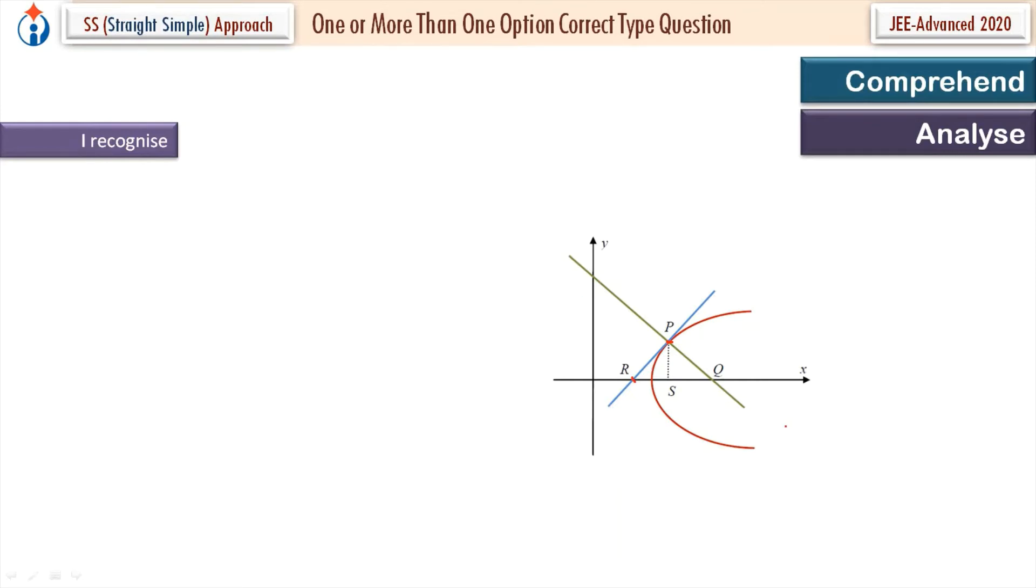Normal cuts off equal intercept. Now if normal cuts the equal intercept on the x-axis, y-axis, means the slope of this line will be minus 1. So I recognize this. The slope of tangent will be plus 1. And when m₂ is equal to minus 1.